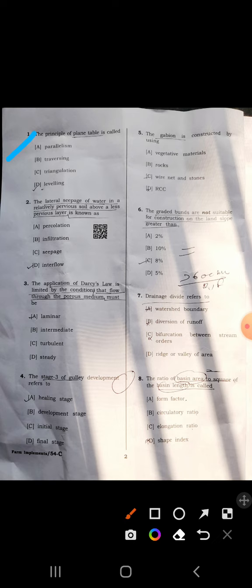Fifth question: The gabion is constructed by using wire net and stone. Now come to sixth: Graded bunds are not suitable for construction on land slope greater than 8%.